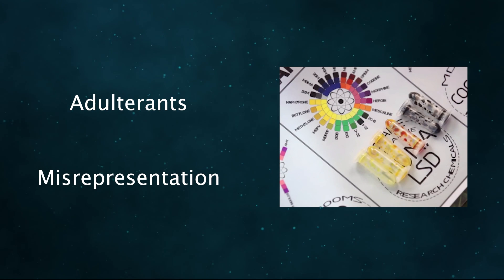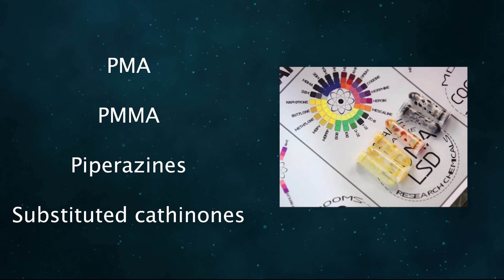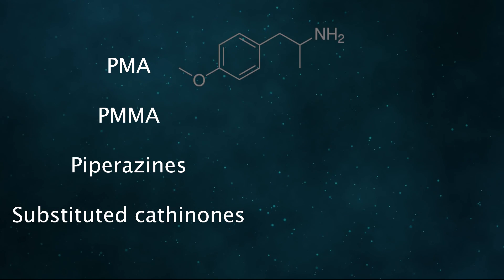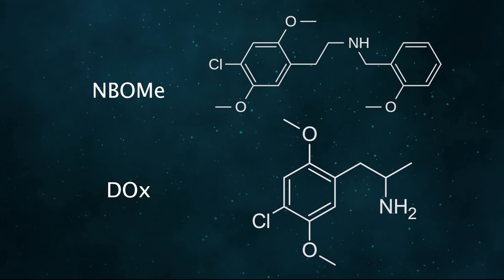Adulterance and misrepresentation are found throughout the drug market. Some of the markets that have been particularly problematic are MDMA and LSD. The MDMA market has at various times and in various places contained drugs like PMA, PMMA, Piperazines, and Substituted Cathinones, while the LSD market has been affected by N-BOMs and members of the DOX class.